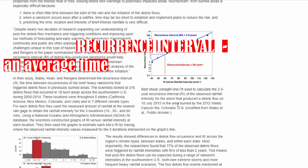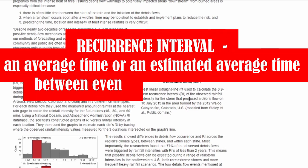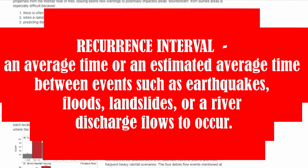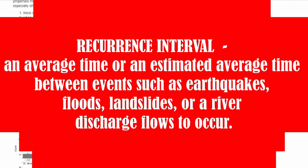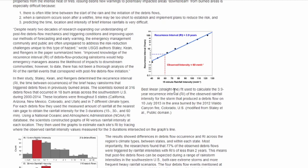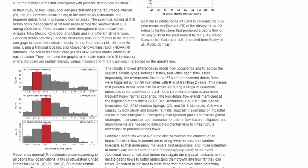A best linear straight-line fit is used to calculate a 3.9-year recurrence interval — basically the average of how often that occurs. On average, about every four years you'll have one of these intense debris flows due to rainfall intensity causing huge debris flows in burned areas. Pretty interesting little article.